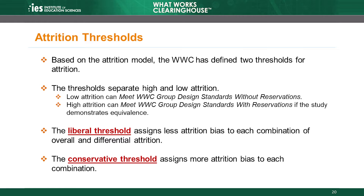This is important because RCTs with low attrition can meet WWC group design standards without reservations, but RCTs with high attrition can only meet WWC group design standards with reservations, and to do so, they must demonstrate that the intervention and comparison groups were similar at the beginning of the study. The WWC review teams select the threshold they will use — liberal or conservative — before reviewing any studies, and they document this decision in a review protocol.